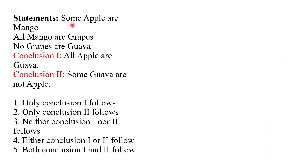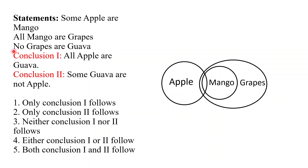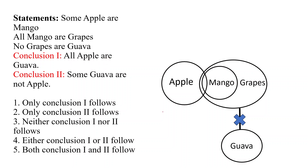The statement says some apple are mango — let's draw that. All mango are grapes will be drawn like this. No grapes are guava will be drawn like this. Conclusion one says all apple are guava — there is no direct relation between apple and guava. Conclusion two says some guava are not apple. Since these two circles have no direct relation, conclusion one will be wrong and conclusion two will be wrong.